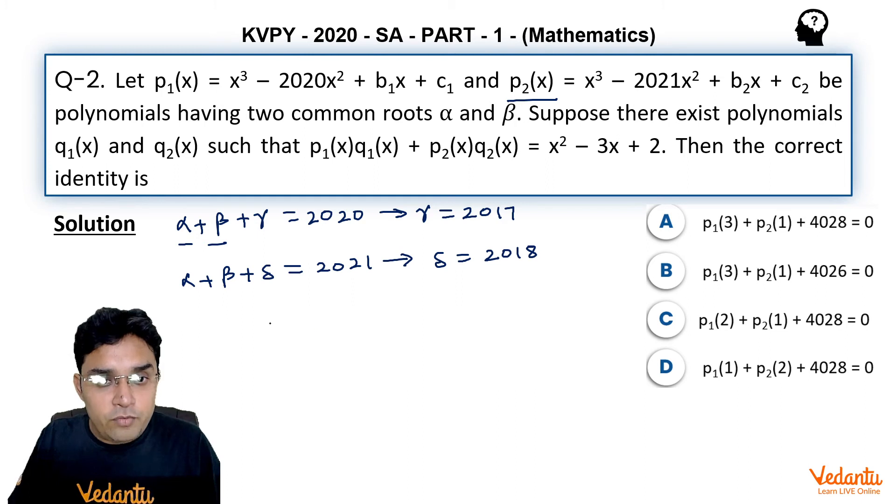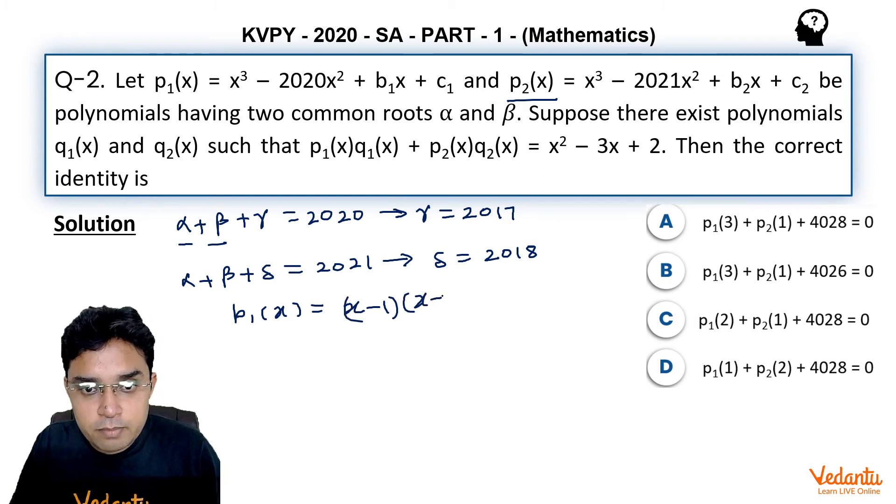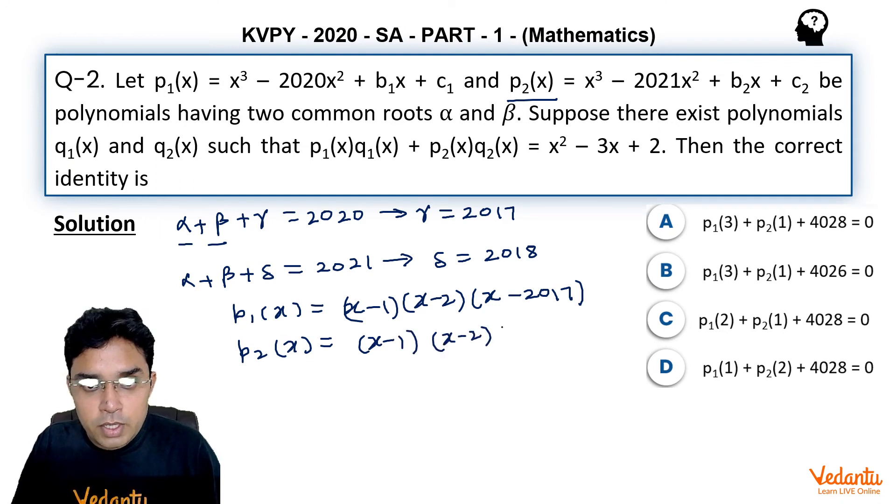So we get that p₁(x) will be equal to (x - 1)(x - 2)(x - 2017) by factor theorem. Similarly, p₂(x) can be written as (x - 1)(x - 2)(x - 2018).